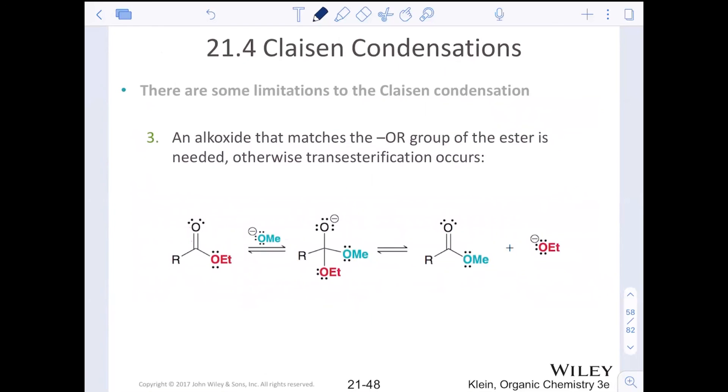Last limitation here is looking at that alkoxide that matches, otherwise transesterification could happen too. It's not only just using an alkoxide that's important, it's using an alkoxide that matches. We don't want this reaction to occur where we have competition for our enolate formation with transesterification. If you have OEt as your ester, use OEt minus one as the base. Very simple. Match it up.